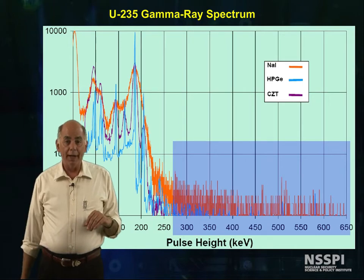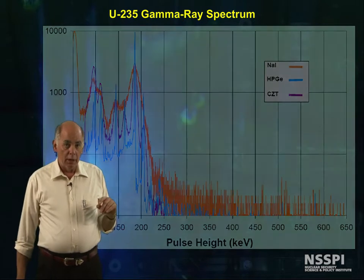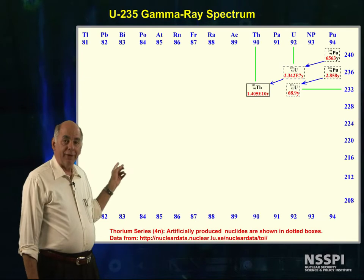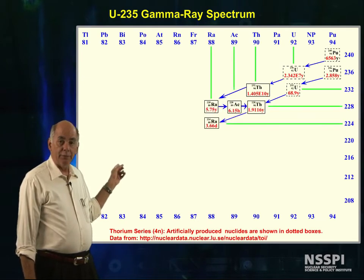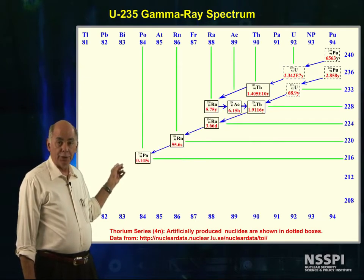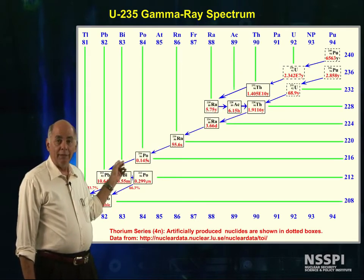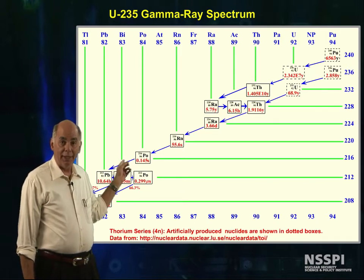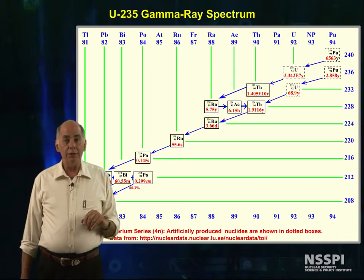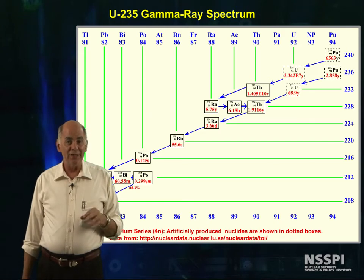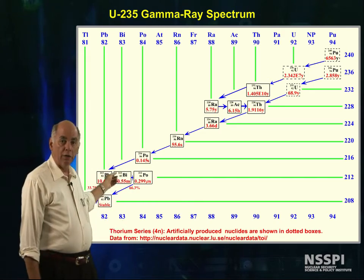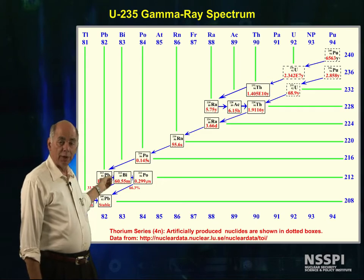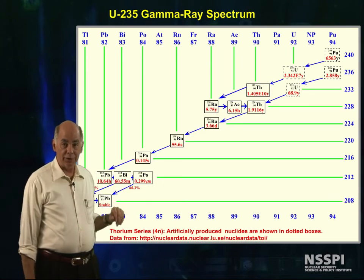Here is the simplified decay scheme for the thorium-232 series. Many of these daughters emit gammas. This series is also known as the 4N series, because if you look carefully, all of the daughters' mass numbers are exactly divisible by 4.